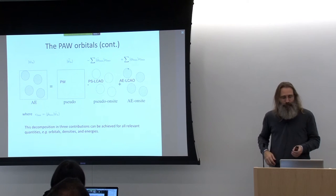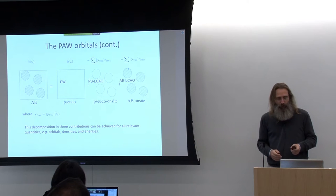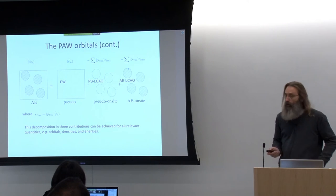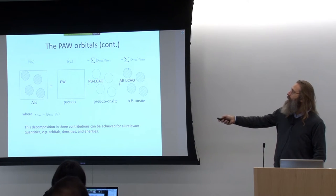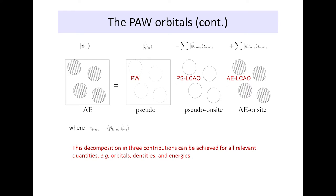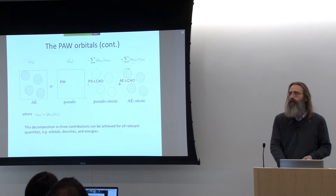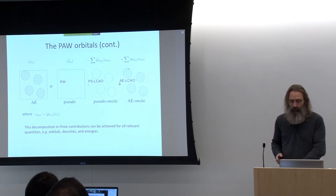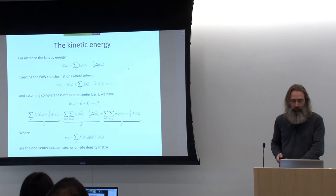This particular decomposition of the wave function into three parts — a pseudo plane wave part, a pseudo radial part, and an all-electron radial part — carries over to all quantities that we compute. Not only orbitals, but also densities and energies decompose into these kinds of contributions.